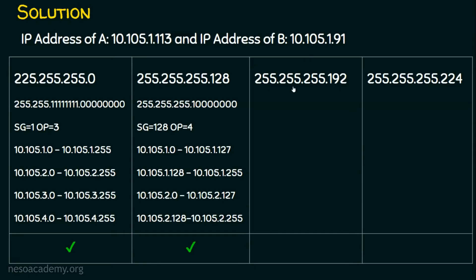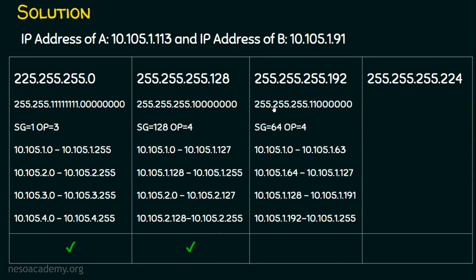For option C (255.255.255.192), converting 192 to binary gives 11000000 in the fourth octet. The first 1-bit from the right is at decimal position 64, so the subnet generator is 64. The subnets are: 0–63, 64–127, and so on. IP address 113 falls in the second subnet (64–127), and 91 also falls in the second subnet, so A and B are in the same network with this subnet mask.